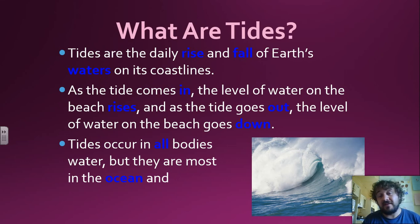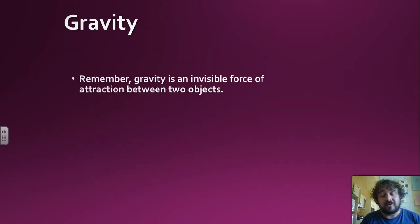So as the tide comes in, the level of the water on the beach rises, and as the tide goes out, it goes down. So all bodies of water have it, but it's most noticeable in the ocean. Gravity is that invisible force of attraction between two objects, and that's what causes it.